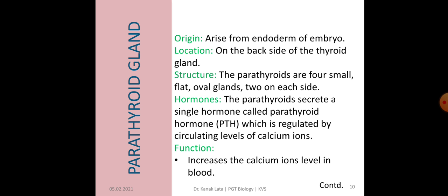Now let us discuss about another endocrine gland, that is Parathyroid gland. Parathyroid gland also originates from endoderm of embryo and they are located on the back side of thyroid gland. There are four parathyroid glands, which are small, flat and oval glands present on each side of thyroid gland. The hormone secreted by parathyroid gland is called Parathyroid Hormone or PTH, and its regulation is by circulating levels of calcium ions.